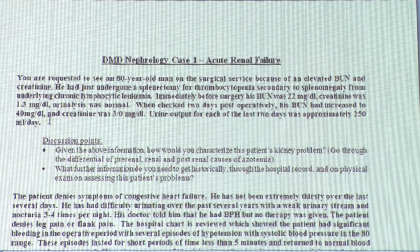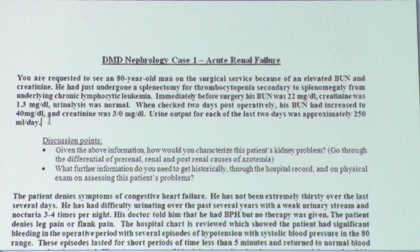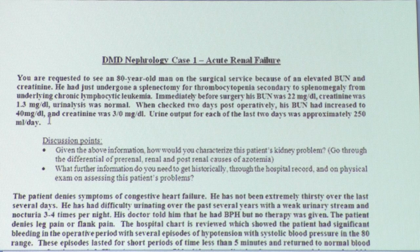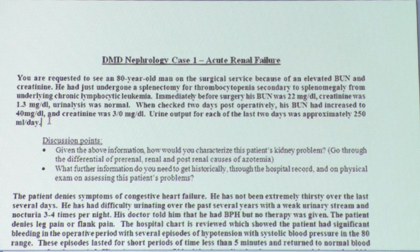Historically, different markers have been tried — cystatin C and newer experimental markers — but right now we work with creatinine, that's all we have. Creatinine is a good surrogate marker of renal function because it's freely filtered, minimally secreted by the proximal tubule, and not reabsorbed. If you're having a steady diet, you're producing the same amount of creatinine every day.